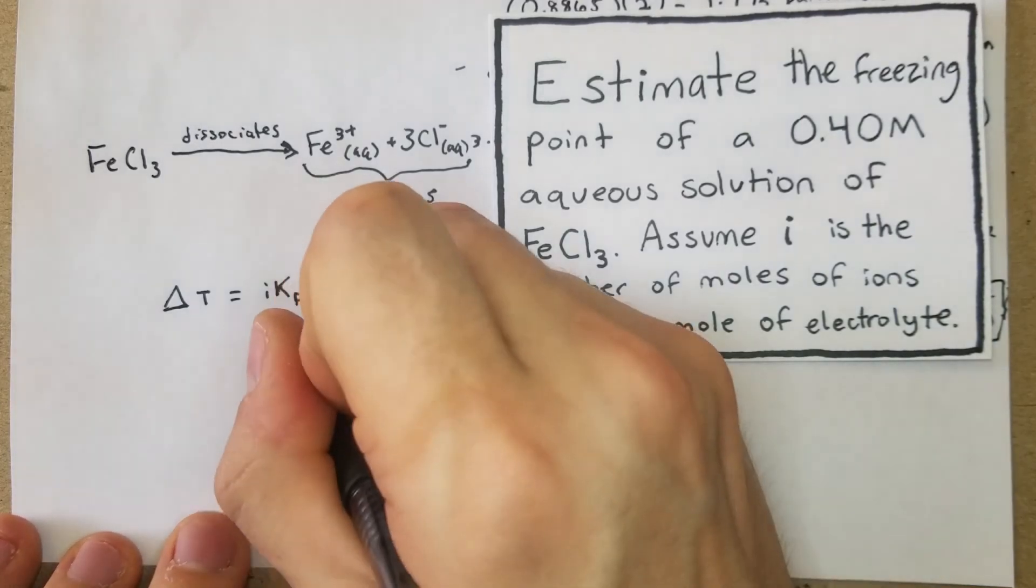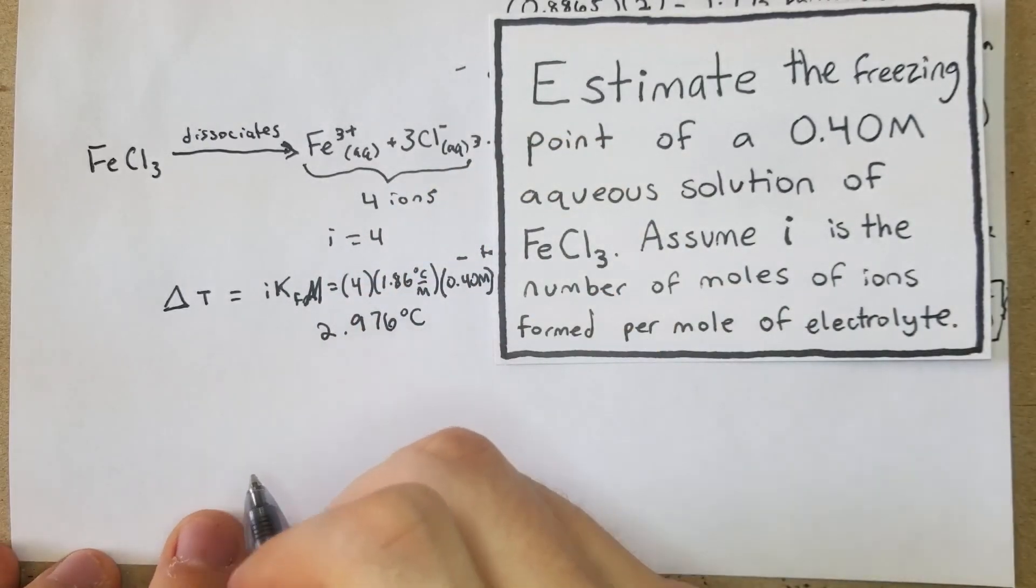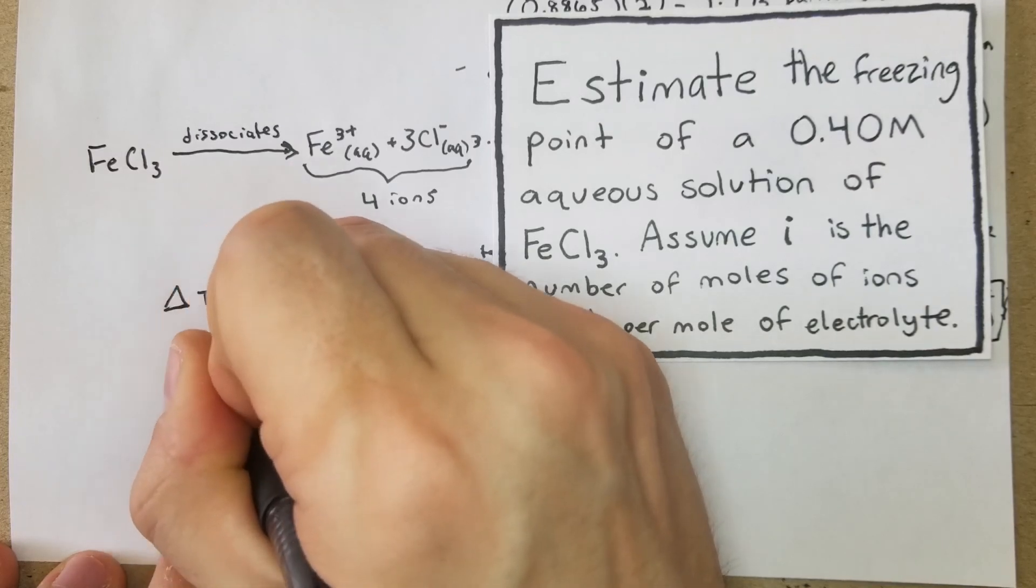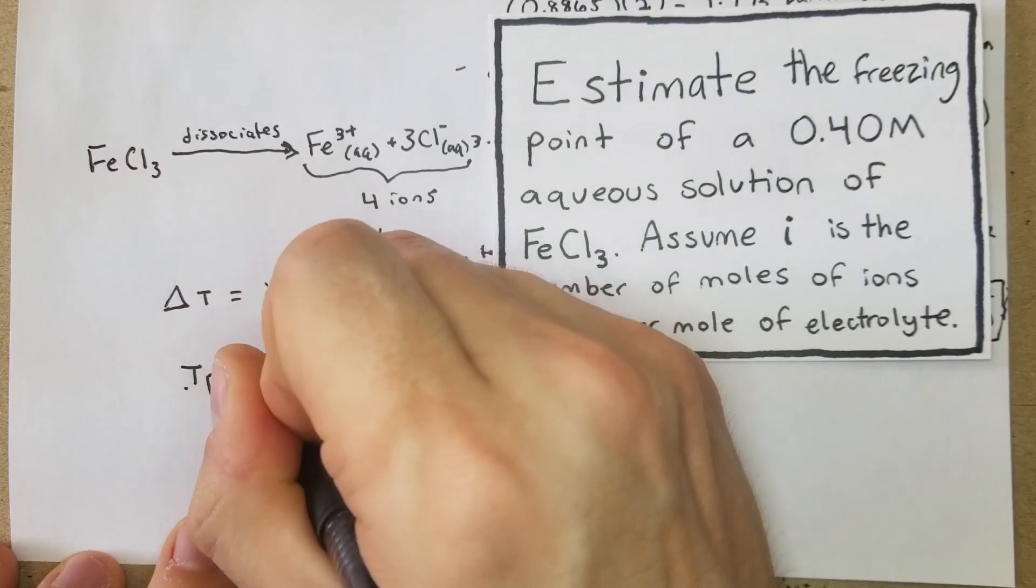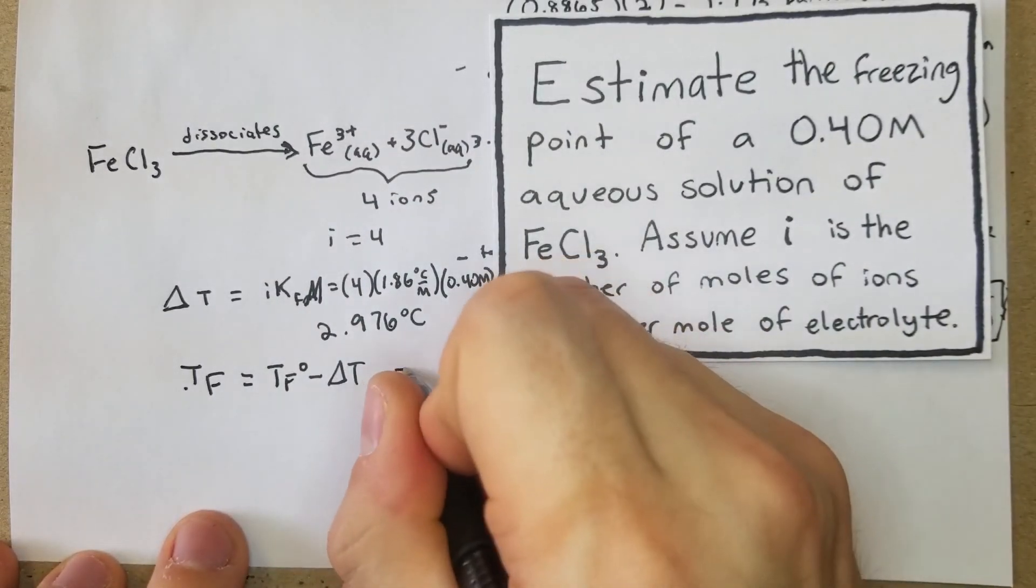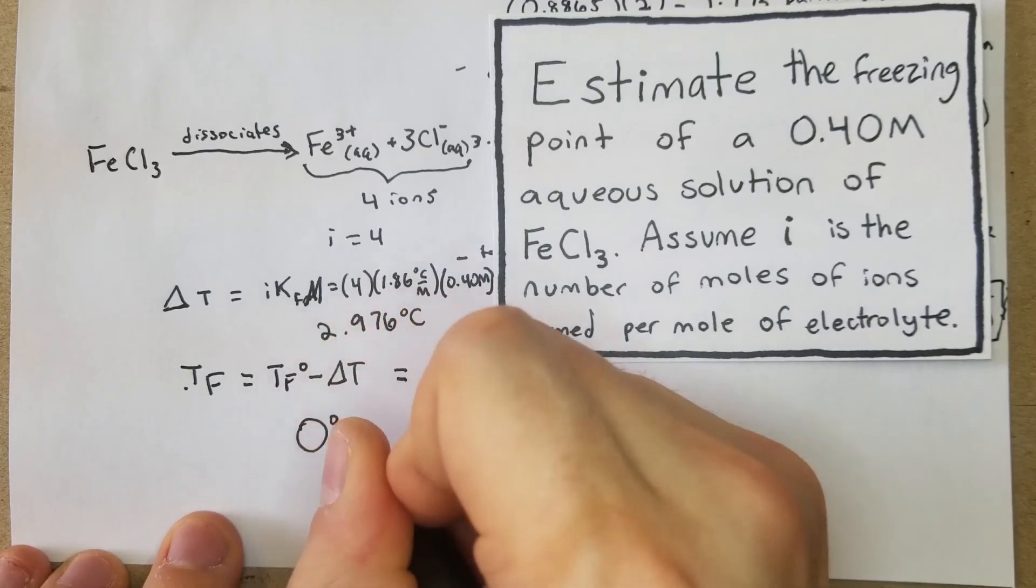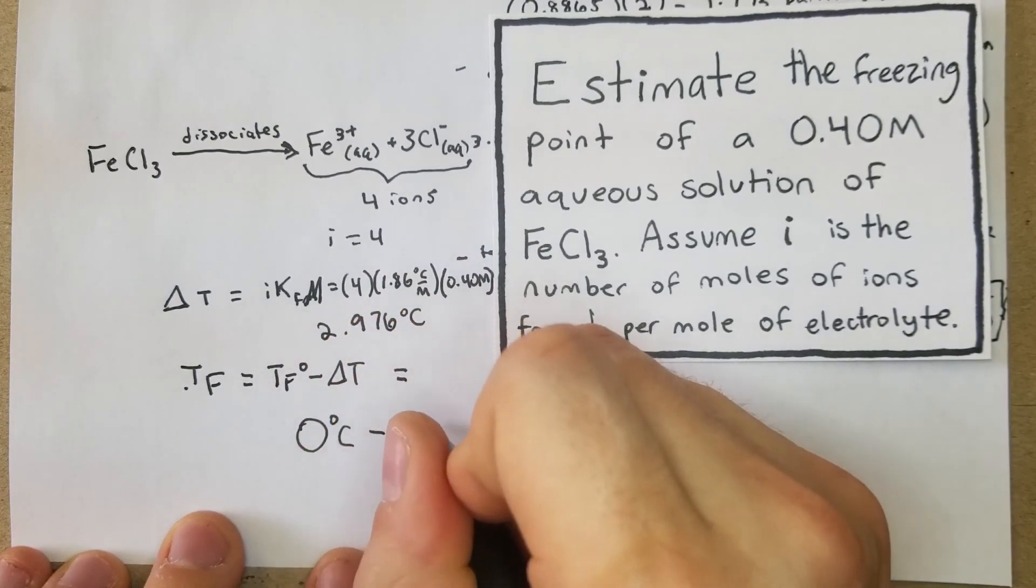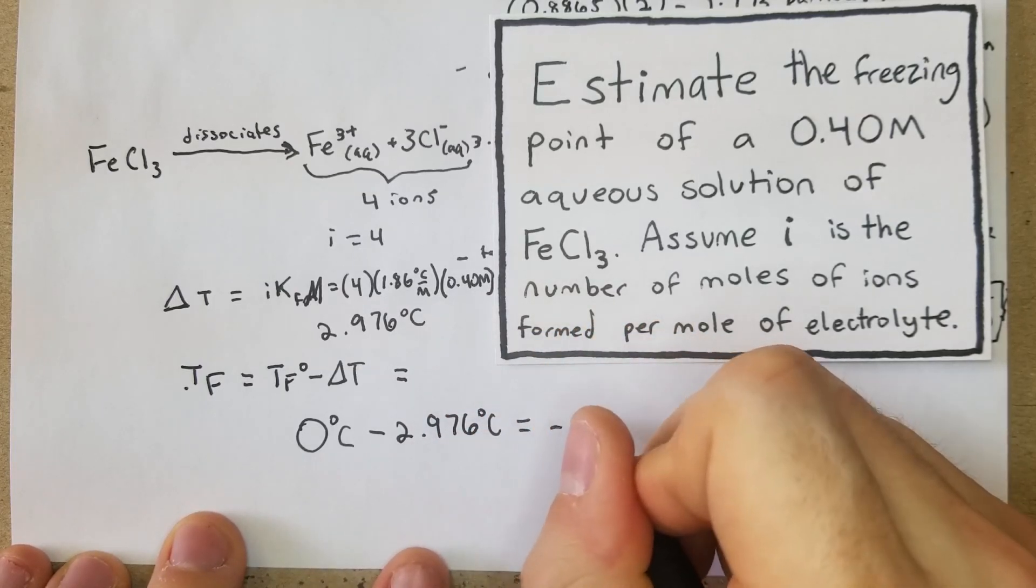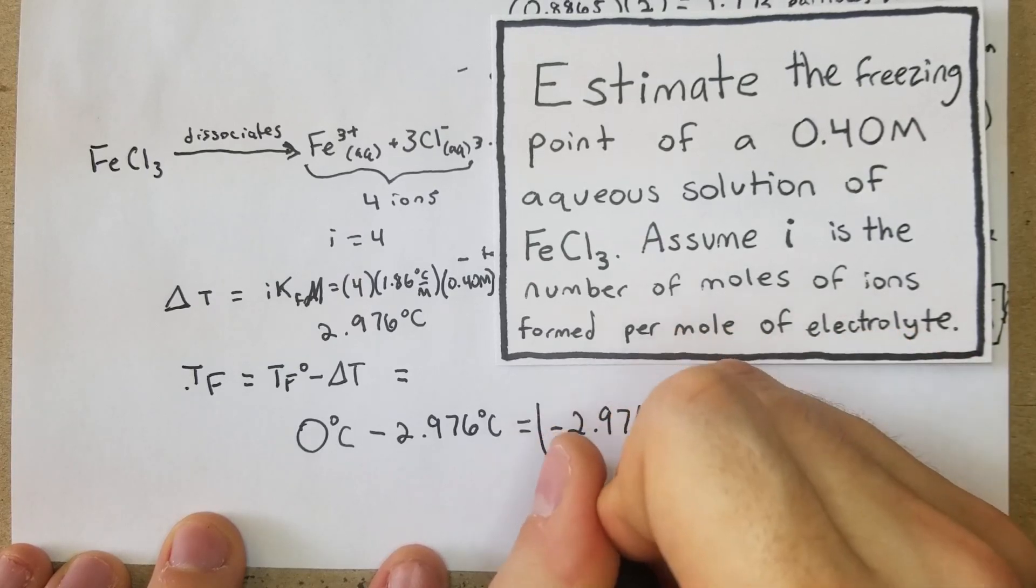What I got was 2.976 degrees Celsius, which is our change. So now we're going to do our Tf equals Tf degrees minus our change in T, which is 0 degrees Celsius minus 2.976 degrees Celsius, equals negative 2.976 degrees Celsius, which is our answer.